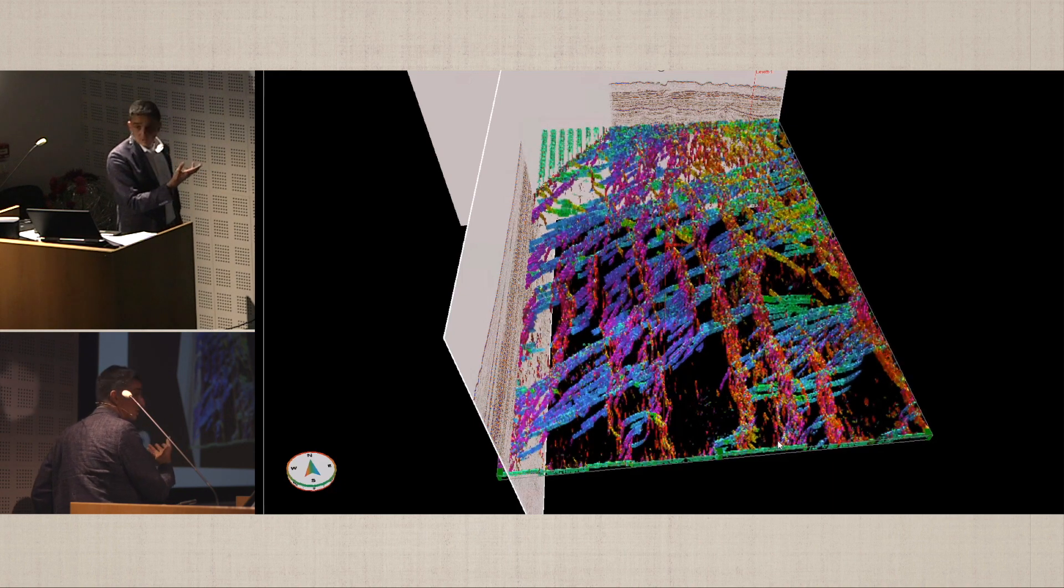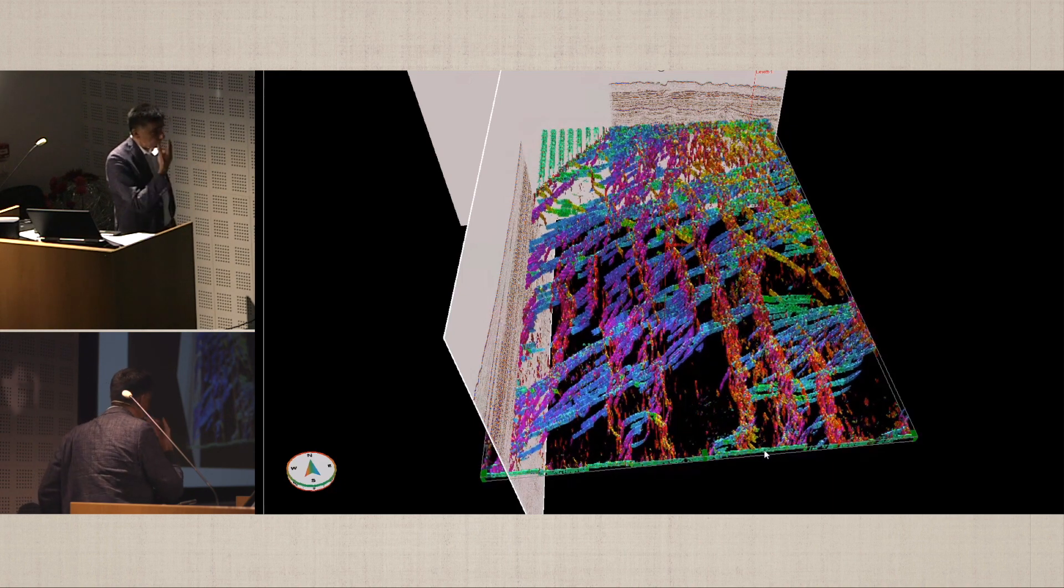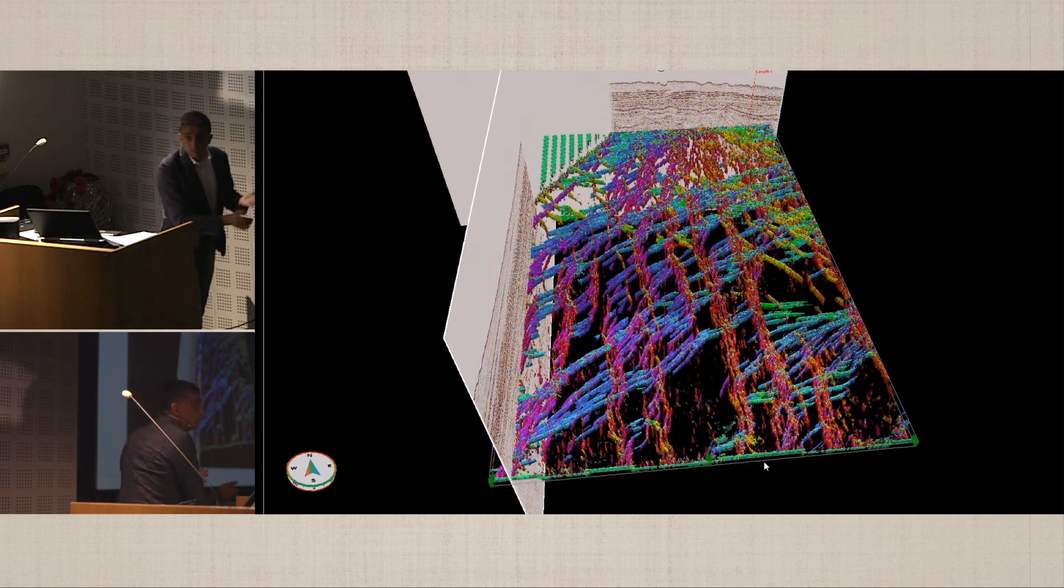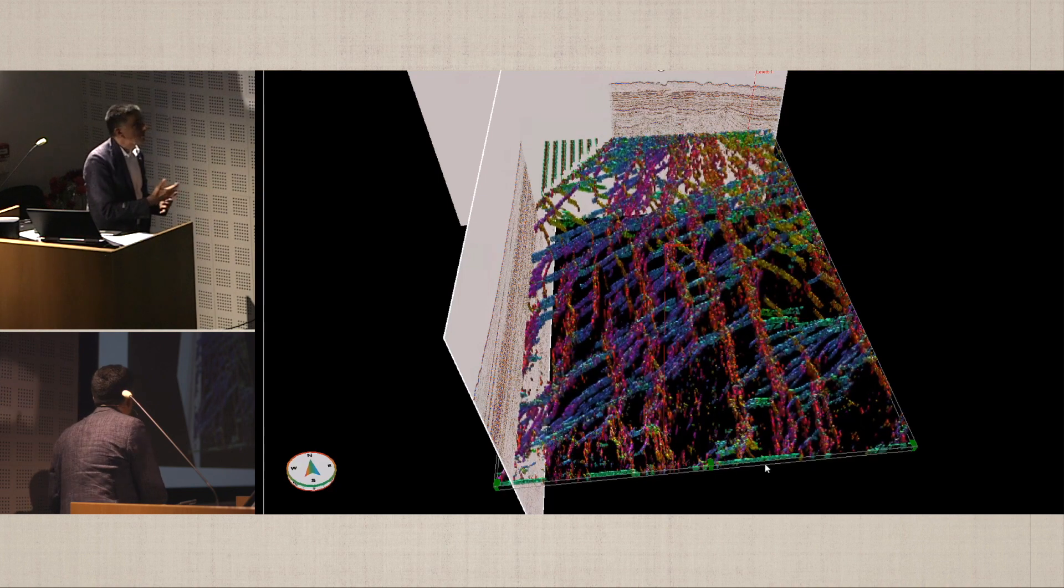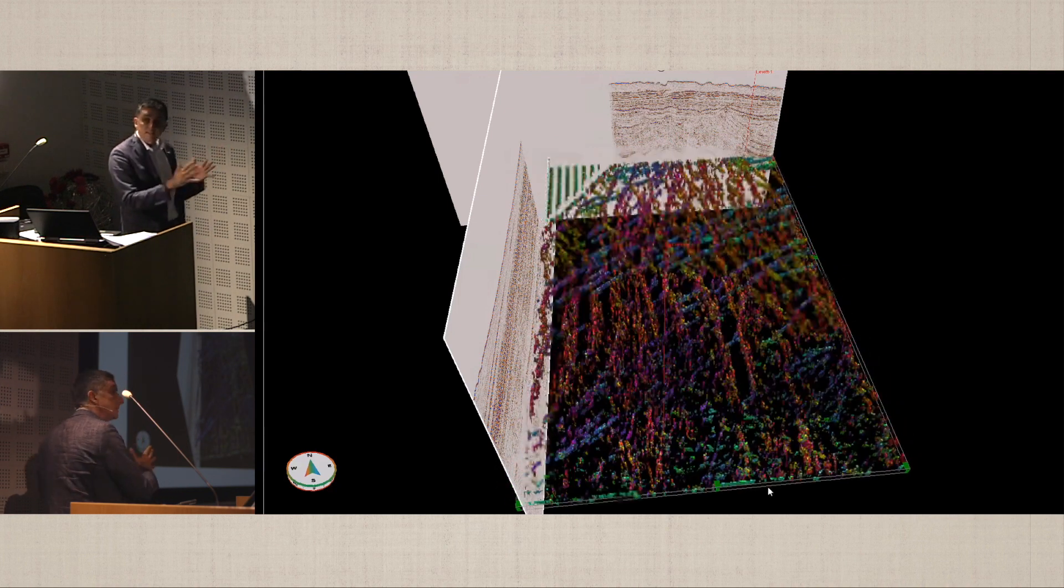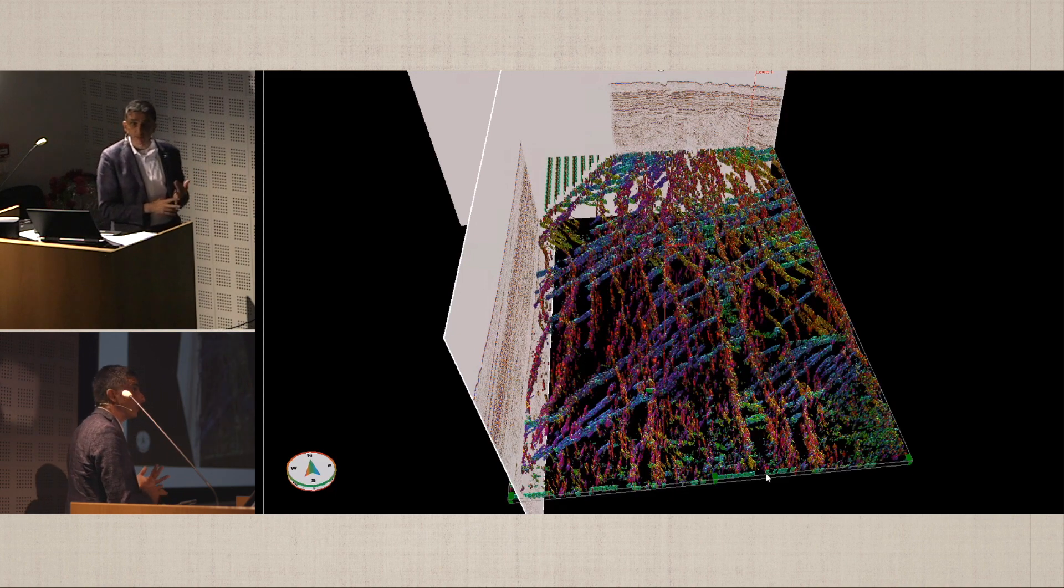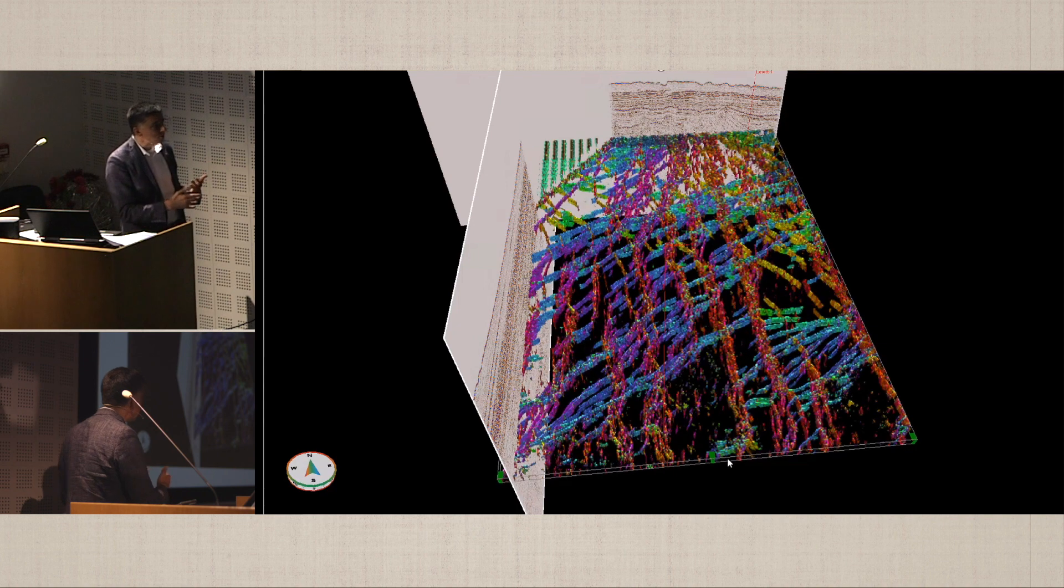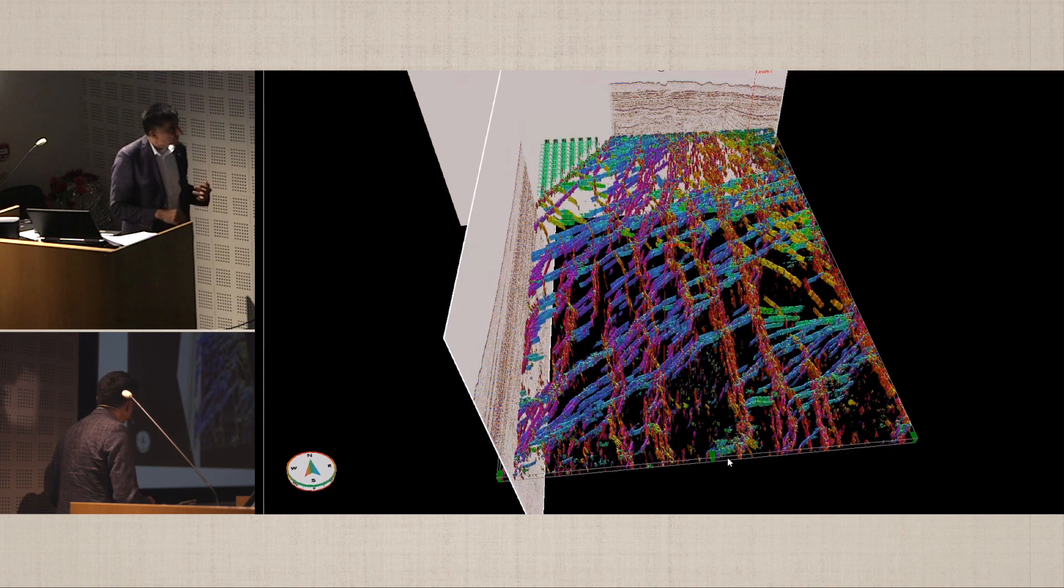If we calculate these fault trend attributes, then we can filter based on their orientations. Differentiating between these phases, the tectonic phases which happened throughout the lifetime of this basin, becomes a bit more possible.